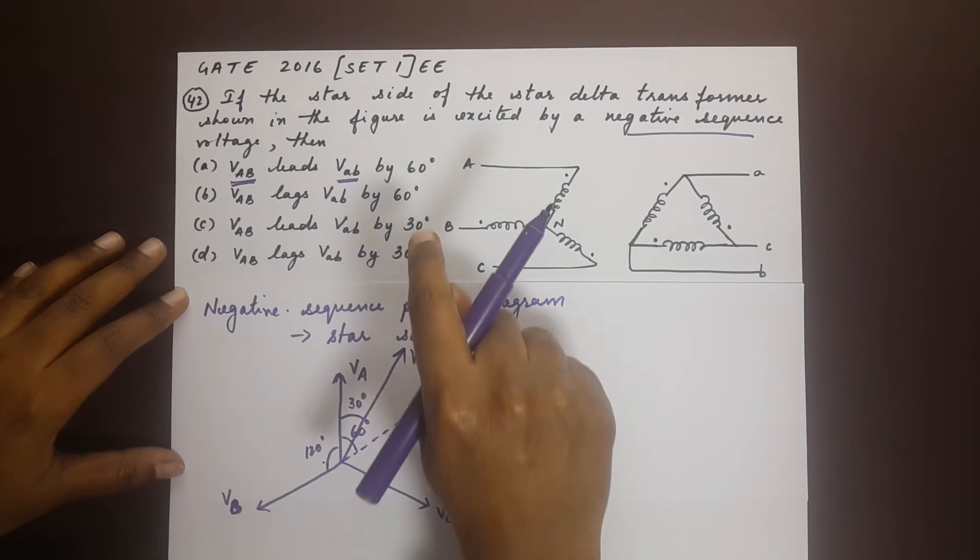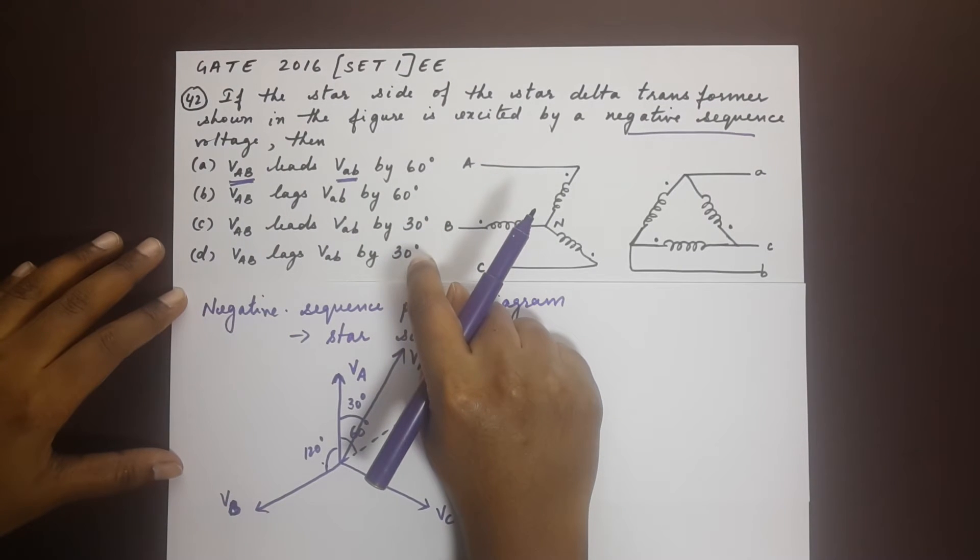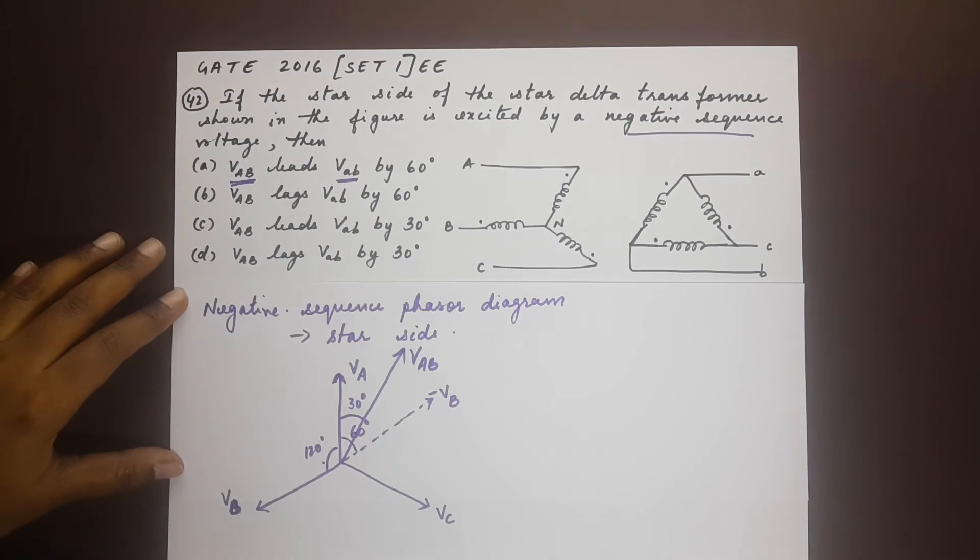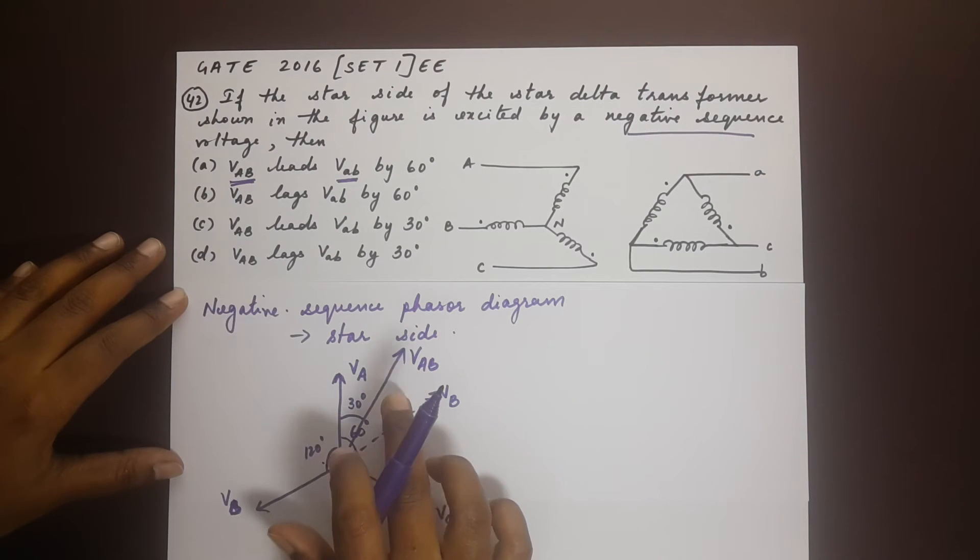Now that tells us that one of C and D is right. So 30 degrees is the right mark, is the right angle. So it could either be VAB leads vab by 30 or vab lags VAB by 30. So we now know that VAB falls in this area of the phasor.